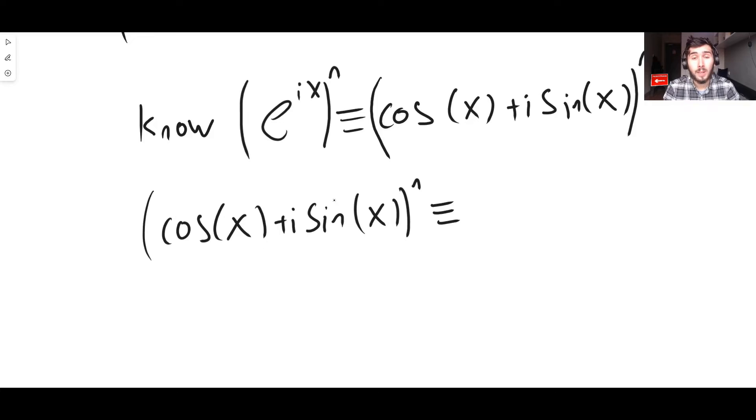We're saying that's identical to, and all we have to do now, is e to the i x to the power of n. But again, we can use index laws here, as we've seen many times before using complex numbers. E to the i x to the power of n.